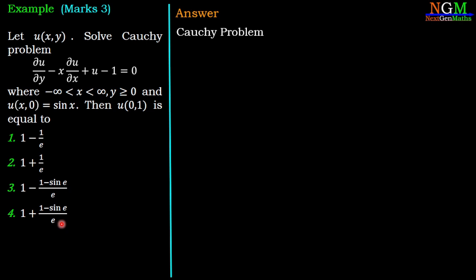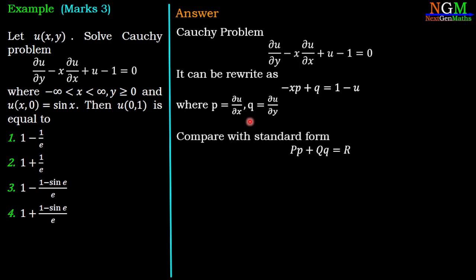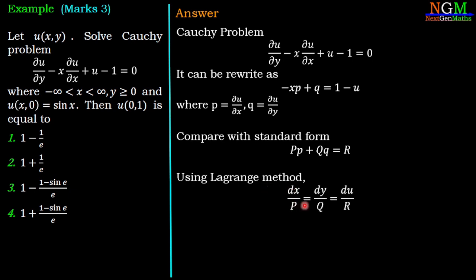Solution: we have the Cauchy problem ∂u/∂y − x·∂u/∂x + u − 1 = 0. We can rewrite this equation as −xp + q = 1 − u, where p = ∂u/∂x and q = ∂u/∂y. Comparing with the standard form of a linear PDE, Pp + Qq = R, we use Lagrange's auxiliary equations: dx/P = dy/Q = du/R, where P = −x, Q = 1, and R = 1 − u. Substituting, we have dx/(−x) = dy/1 = du/(1 − u).